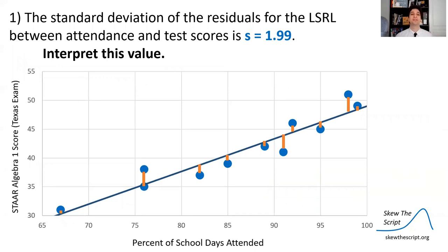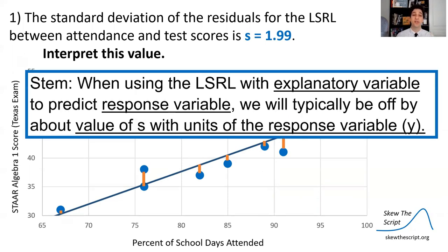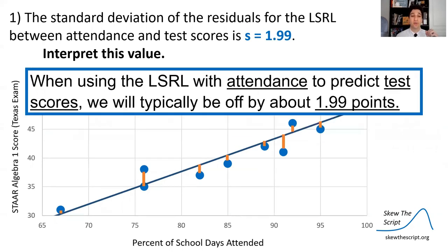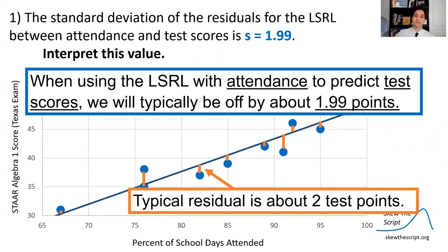Looking back at our attendance versus test scores graph, the standard deviation of residuals was about 1.99. The typical residual length is 1.99. The stem we can use is: when using the least squares regression line with attendance as the explanatory variable to predict test scores, we'll typically be off by about 1.99 points — in other words, our predictions are typically off by about two questions right or wrong on the test.